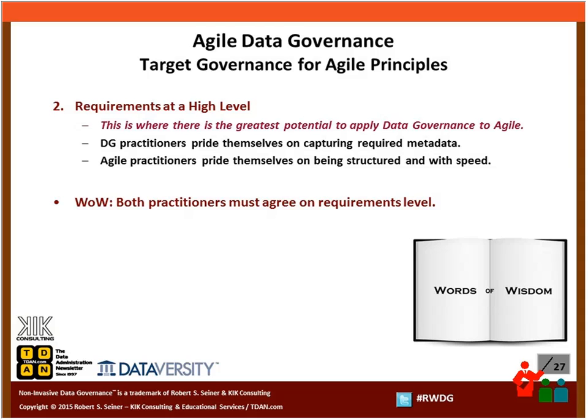On the agile side, folks delivering agile projects pride themselves on being structured and delivering things quickly. One of the words of wisdom I want to share: we've got to get practitioners from both sides — from data governance, from data management, and from the agile delivery side — to agree on a certain level of requirements. If we can do that, that's another way of applying governance to your agile delivery method. We want to get them in the same room to agree what level of detail of requirements we're going to need to move the project forward.